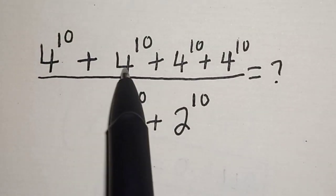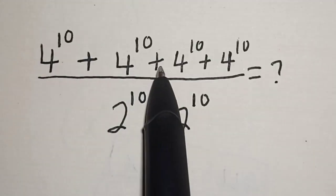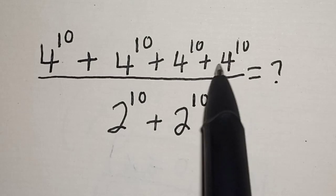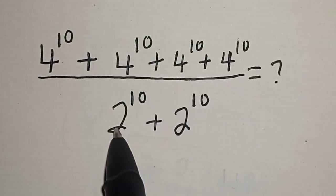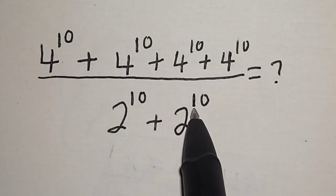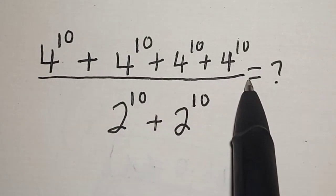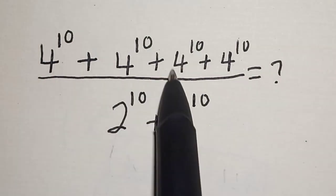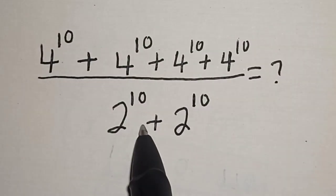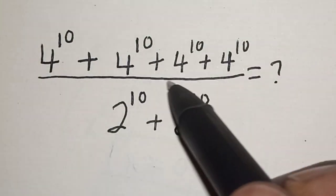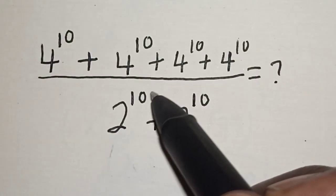Hi everyone, welcome to my class. In this class we quickly want to evaluate this math problem: 4 raised to power 10 plus 4 raised to power 10 plus 4 raised to power 10 plus 4 raised to power 10, divided by 2 raised to power 10 plus 2 raised to power 10. What is this equal to?